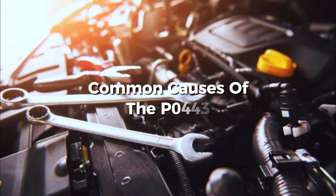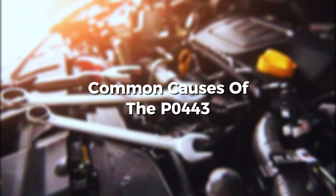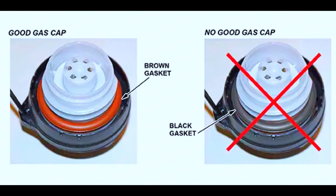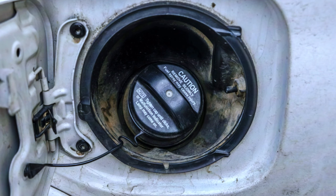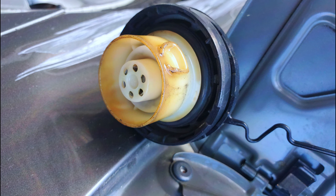There are a few culprits that commonly cause the PO443 code, let's break them down. First, a loose or faulty gas cap — this is the most common reason. Make sure your gas cap is clicked shut all the way. Some caps have a rubber seal that can wear out over time, and you can try replacing the cap for a few bucks.